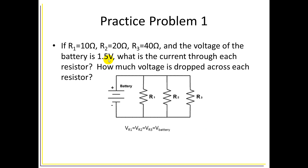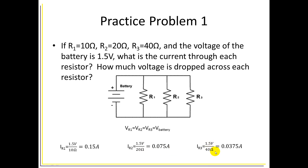We can answer the current question using Ohm's law: V equals IR, which rearranges to I equals V over R. We know the voltage across each resistor and the resistance of each, so we can compute the current. The current through R1 equals 1.5 volts divided by 10 ohms, giving us 0.15 amps. The current through R2 equals 1.5 volts divided by 20 ohms, giving us 0.075 amps, or 75 milliamps. And R3 equals 1.5 volts divided by 40 ohms, giving us 0.0375 amps, or 37.5 milliamps.